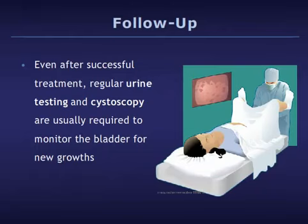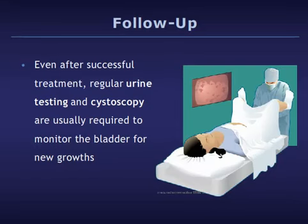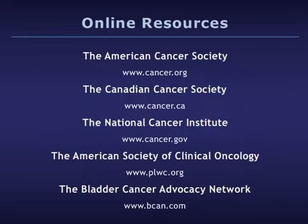Even after successful bladder cancer treatment, regular urine testing to look for blood, abnormal cells, or other cancer markers, and cystoscopy are often required to monitor the bladder for new growths. A typical follow-up schedule involves cystoscopy every three months for the first year, then every six months for a couple of years, then annually for at least five to ten years. Your doctor will advise you on the appropriate follow-up schedule for your situation.